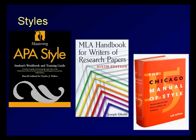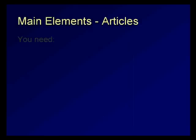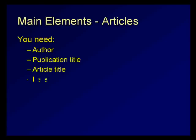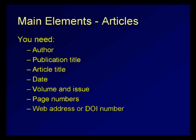Each citation style is slightly different, but all of them include the following elements. For articles, you'll need the author, the publication title — such as Journal of Child Psychology — the article title, the date, the volume and issue, the page numbers, and the web address or DOI number, which is short for Digital Object Identifier, for electronic sources.